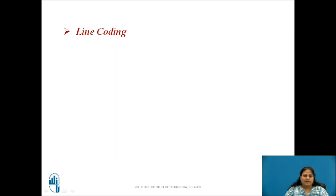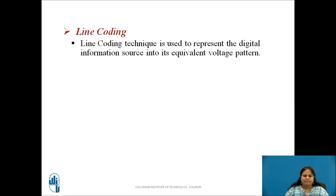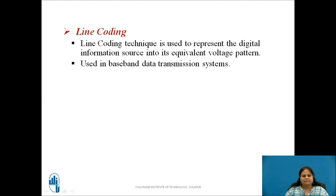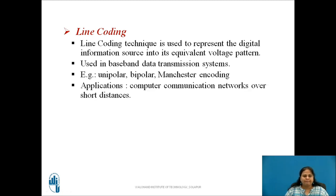In line coding technique, the digital data of the source is represented with different voltage patterns and transmitted. It is somewhat similar to digital to analog conversion but with a discrete time scale. This technique is used in baseband data transmission systems. Common examples of line coding are unipolar coding, bi-polar coding, and Manchester coding. These coding techniques are generally used in computer communication networks over short distances.